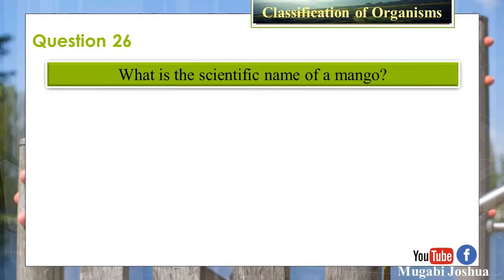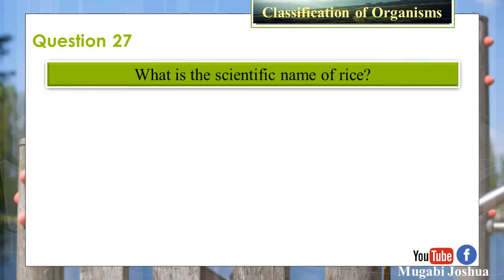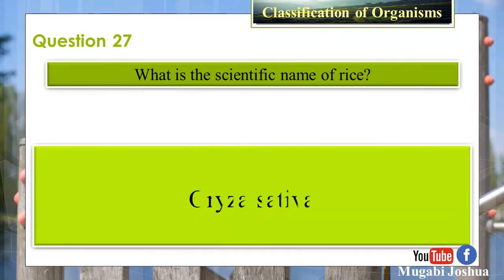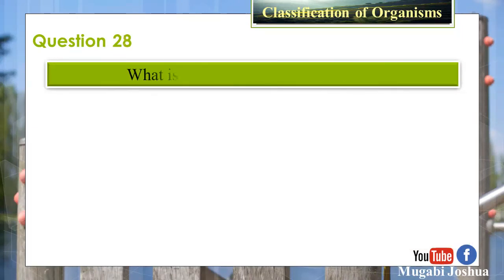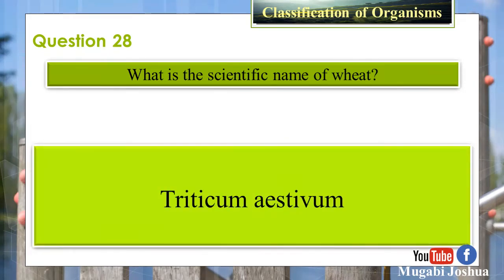Question 26: What is the scientific name of a mango? Answer: Mangifera indica. Question 27: What is the scientific name of rice? Answer: Oryza sativa. Question 28: What is the scientific name of wheat? Answer: Triticum aestivum.